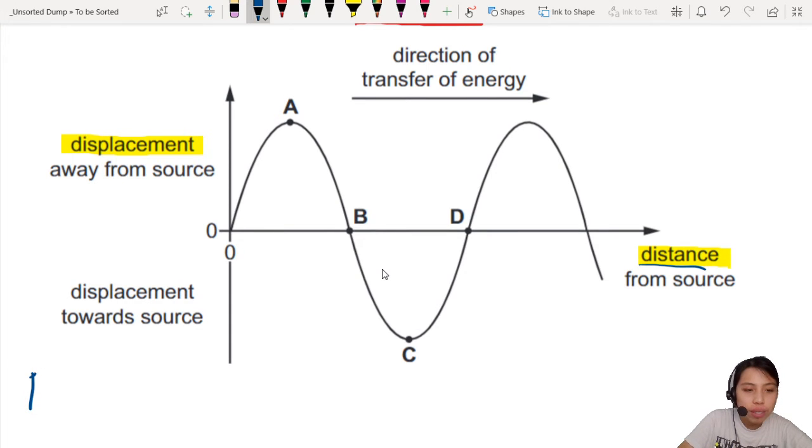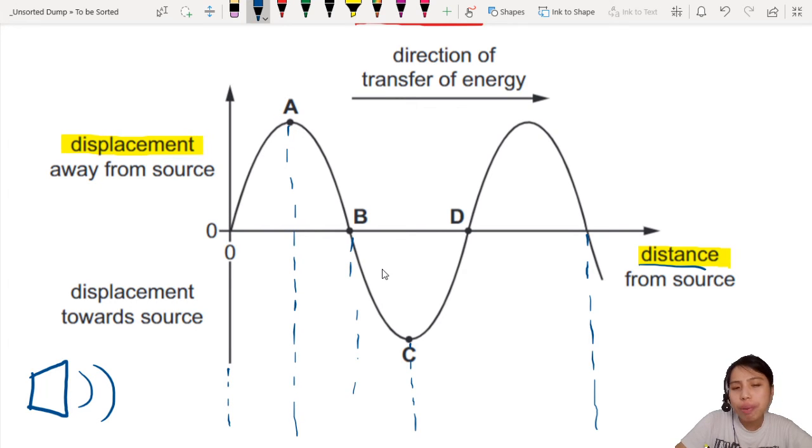I'm going to imagine there is a speaker here, giving out some sound, causing a disturbance in the air. So we have all these points: A, B, C, D. Let's just draw these dots down. These are where the particles should be at equilibrium position.